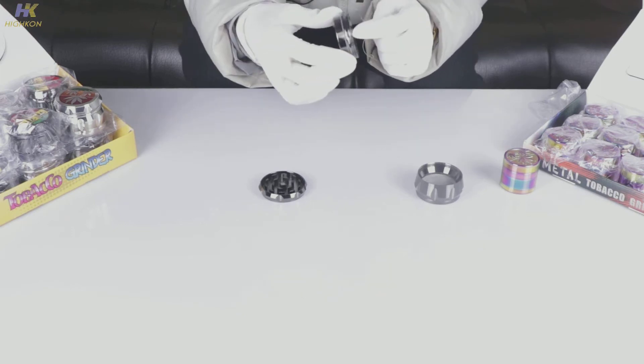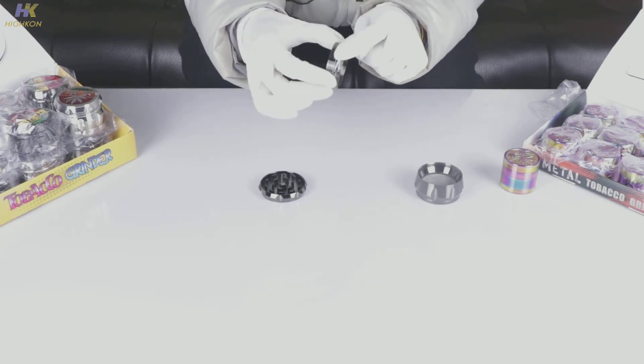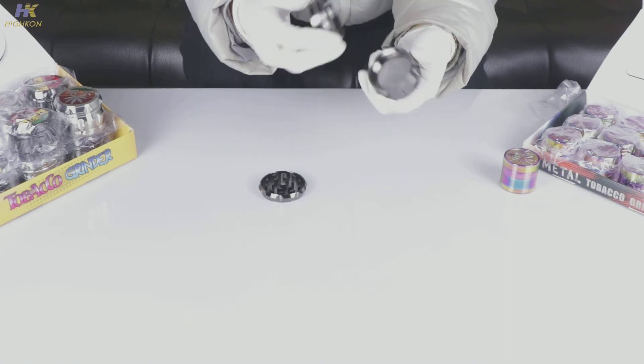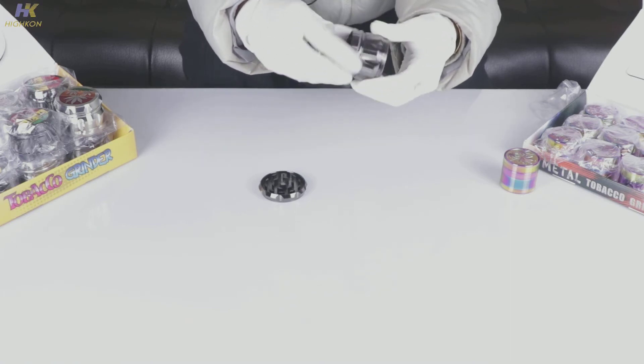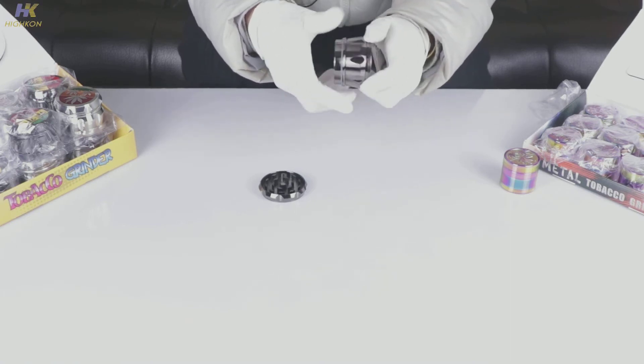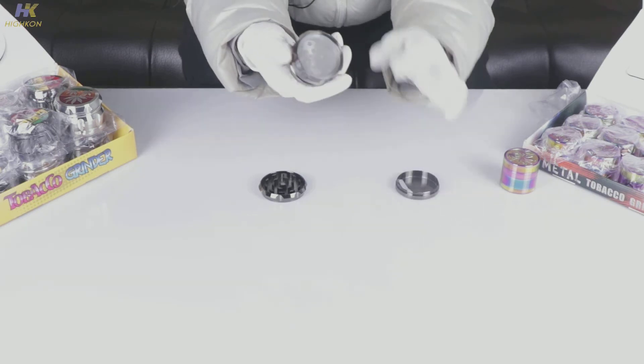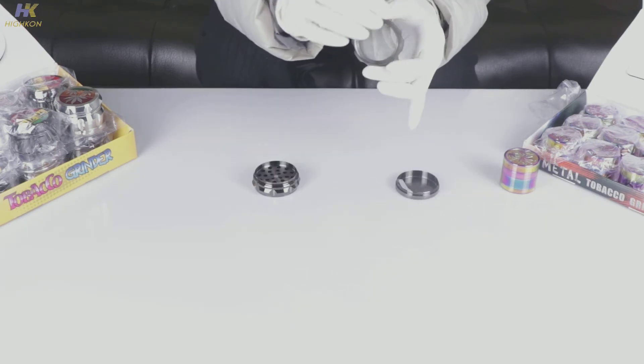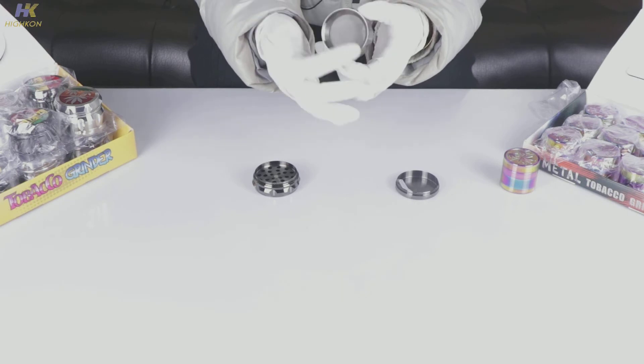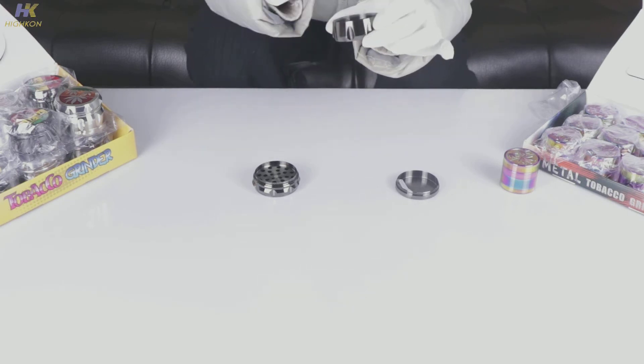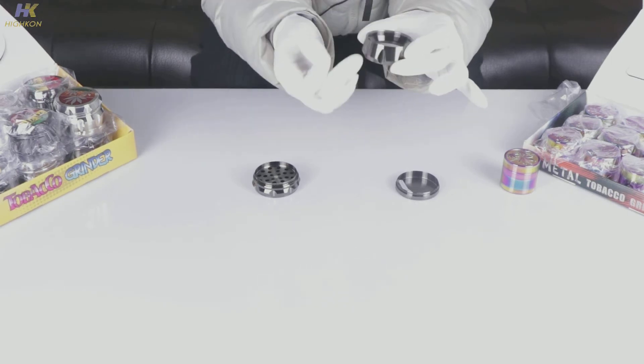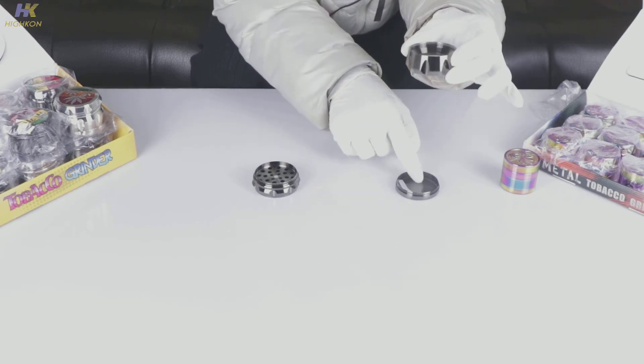At the bottom of the second layer is a thread which matches the third layer. That's how they connect with each other, and also a thread between the last one and the third one. In the third layer, we can see a net made of stainless steel where we gather the smallest ashes of the herb to the last part of the grinder.